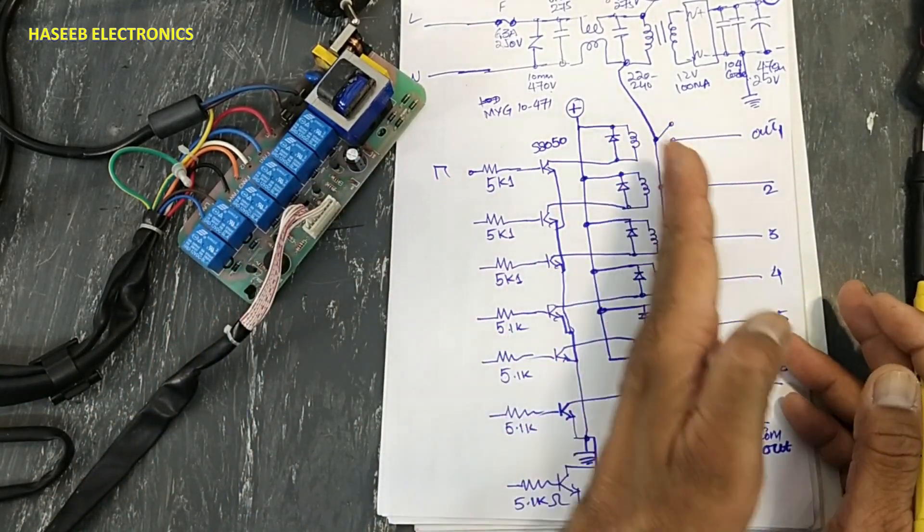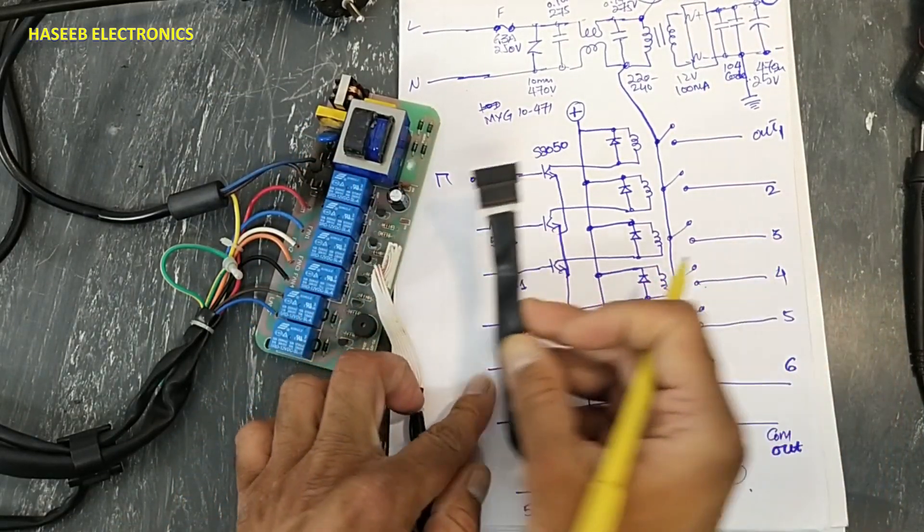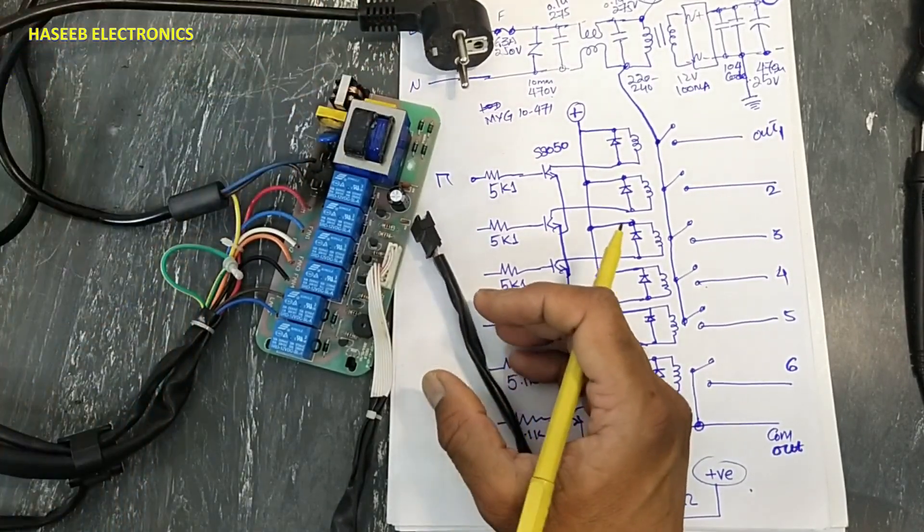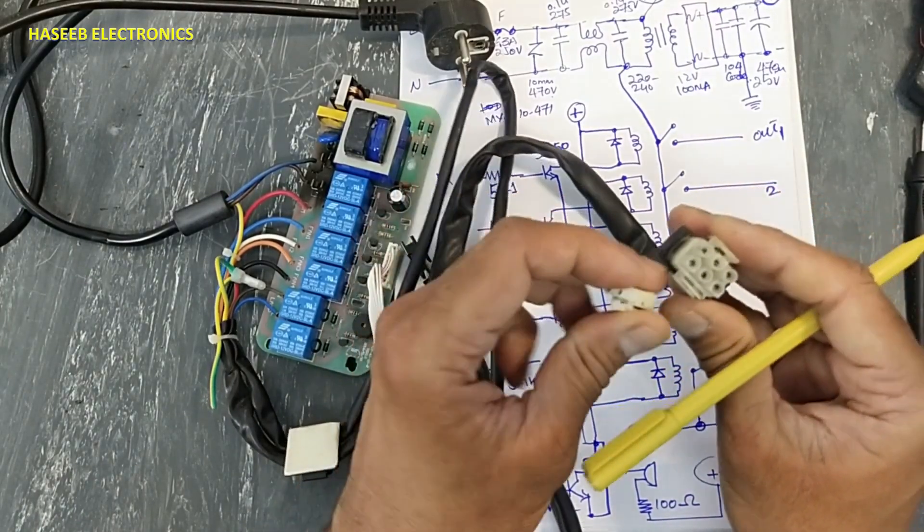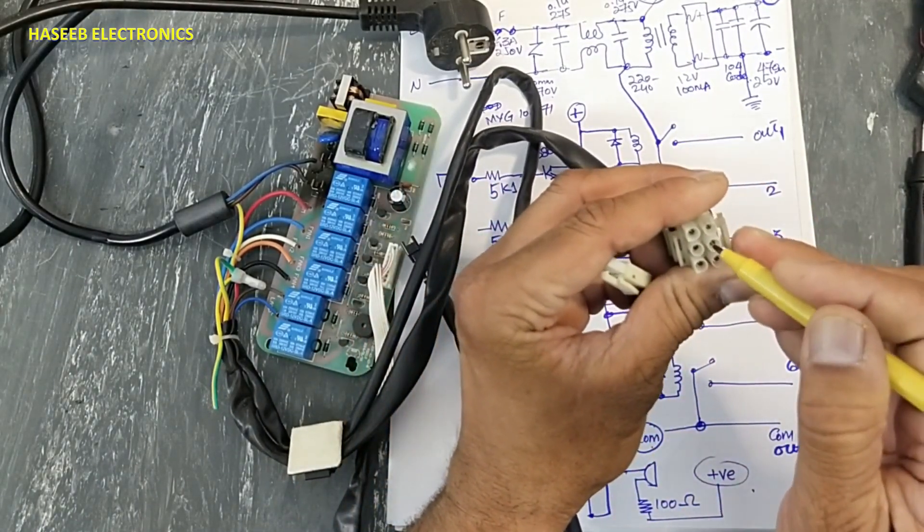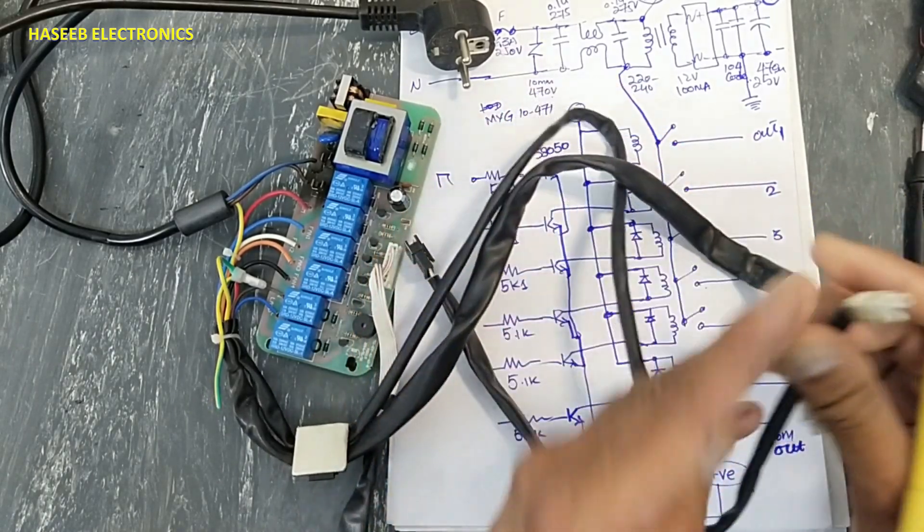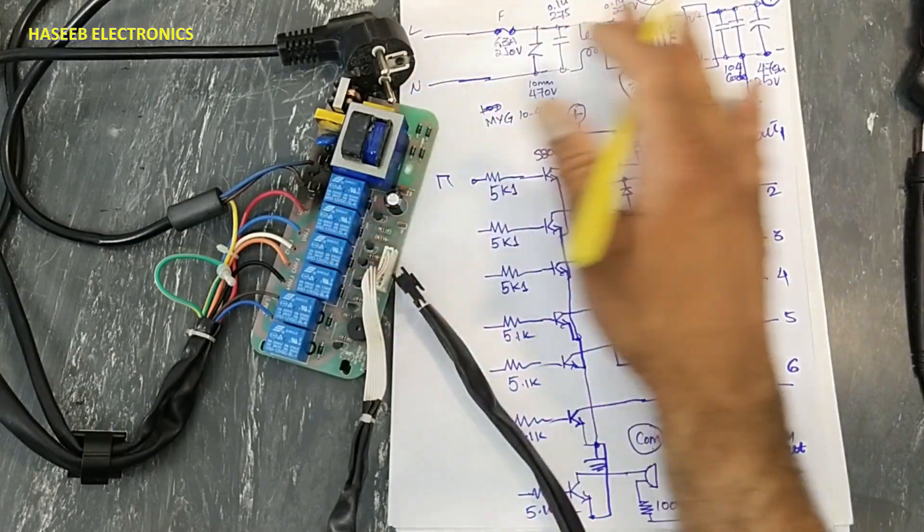It will switch the output voltage. This is a programming connector that is here. It is an input connector that is here, and here are output terminals. One common here, five outputs, and here line and neutral for this relay.